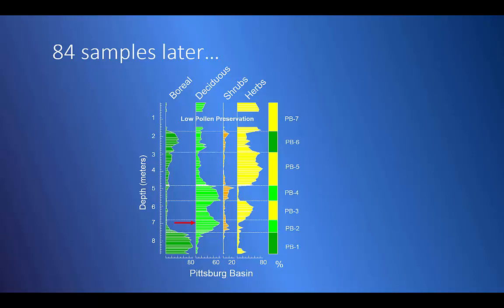Let's start at the bottom with the oldest deposits. Most of the pollen in zone PB1 came from boreal trees, trees that aren't common in central Illinois today. These samples came from glacial deposits from a previous ice age, the late Illinoisan.